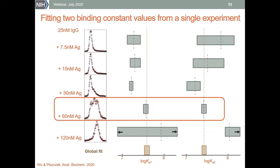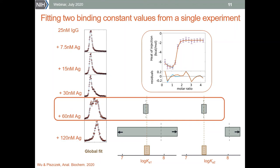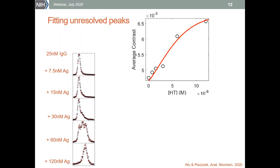We wanted to confirm this data with another method using unlabeled and unmodified proteins, so we used ITC to validate the photometry results. There is another way to analyze mass photometry distributions that is useful when studying interactions with ligands that have smaller molecular masses. In that case, when distribution peaks are not resolved, we can simply calculate the average value of each distribution to obtain either the average contrast or average mass for each titration point, and then fit those points with the appropriate binding model.